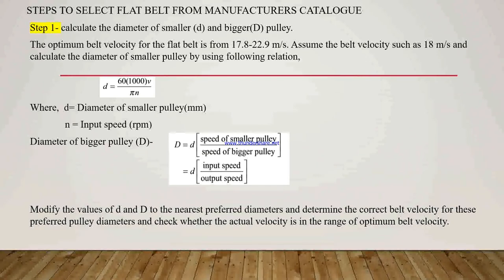To start the steps to select the flat belt from manufacturer's catalog, there are many steps. The first step is the calculation of diameter of smaller and bigger pulleys. The smaller pulley diameter is denoted by small d and capital D for the bigger pulley diameter. To calculate the diameter of smaller pulley and bigger pulley, we require the optimum velocity. The optimum velocity for the flat belt is given in the range from 17.8 to 22.9 meter per second. Here there is one assumption for the velocity, such as 18 meter per second, to calculate the diameter of smaller pulley.